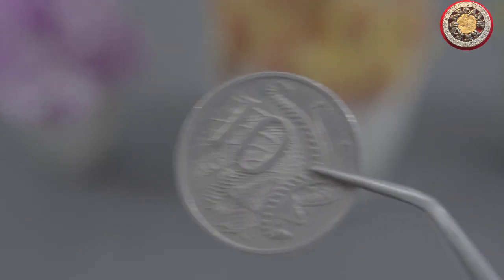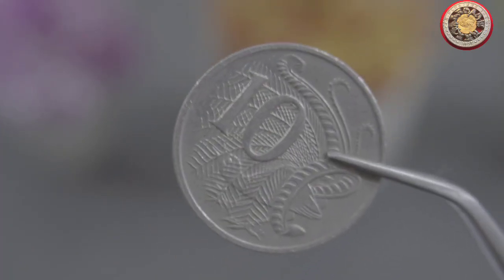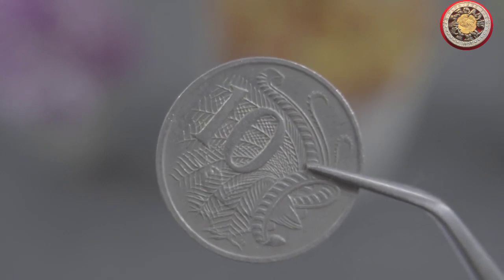But there's more to the story. The shield in the center of the coat of arms features six separate parts, each of which represents a different state or territory in Australia. And the design of the shield itself is based on the traditional symbols of the indigenous people of Australia.